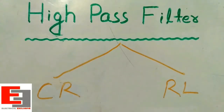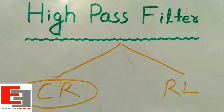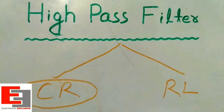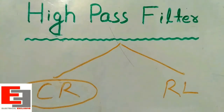Before going to study CR high pass filter, we need to know what a high pass filter is. A filter circuit that allows signals to pass through which are higher than the cutoff frequency is called a high pass filter. In simple words, all frequencies above the cutoff frequency can pass normally, but any frequency lower than the cutoff frequency will lose its intensity.